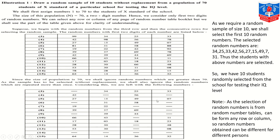In this way the table selection will be made and you will be left with all these numbers. As we require a random sample of size 10, we shall select the first 10 random numbers. The selected random numbers are: 34, 25, 33, 42, 56, 27, 15, 49, 7, and 31. Thus the students with these numbers are selected for testing their IQ level. Important note: since the selection of random numbers from the random number table can begin from any row or column, the random numbers obtained can be different for different persons.